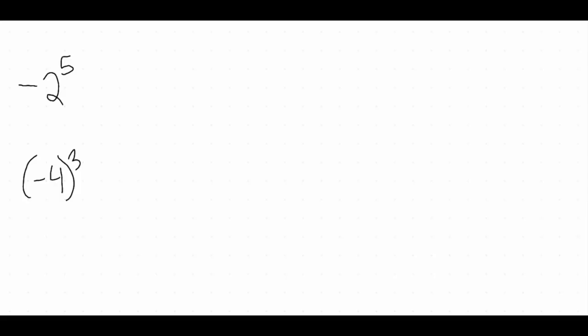I have two different examples here on the board: negative two to the fifth, and then negative four cubed. I want to start with these two examples because there's a very important thing to notice about these questions — specifically how important parentheses are when it comes to calculating any kind of order of operations or calculations like this.